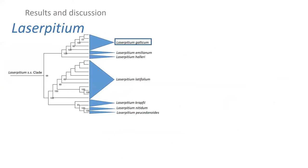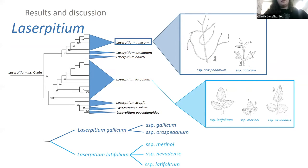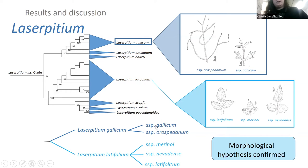In detail, if we look at the Laserpitium sensu stricto clade, we sampled two species and five subspecies. The subspecies of these two species had completely different leaf morphology, and our molecular data simply support the morphological data, which places them within two species. Basically, a morphological hypothesis confirmed.